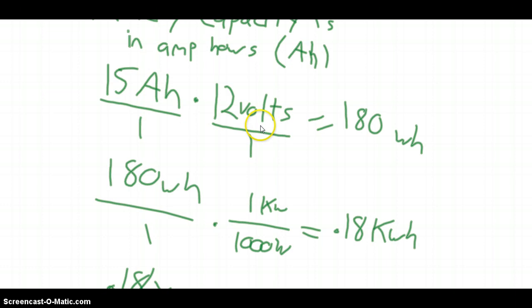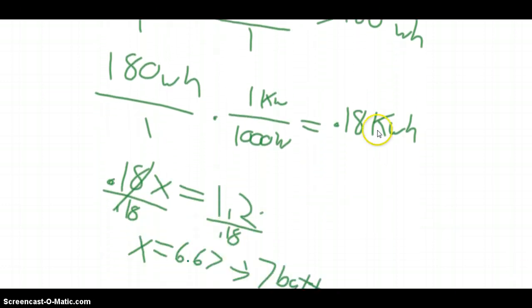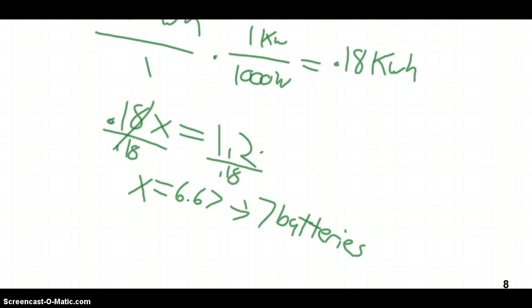We multiply that by 12 volts because amps times volts equals watts. So we get amps times volts equals watts, and then we still have the hour. So we get 15 amp hours is 180 watt hours. Then we convert to kilowatt hours. So this battery stores 0.18 kilowatt hours. And since we want to store 1.2 kilowatt hours, again, it's weird that it turned out like this. It's not always going to be the case by a long shot. But we need to have seven batteries.